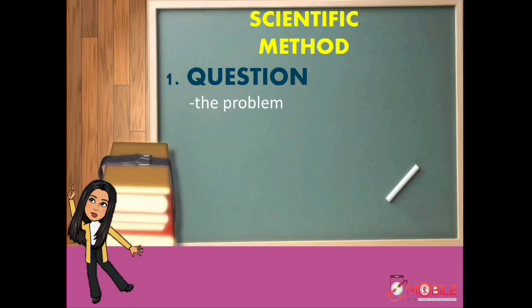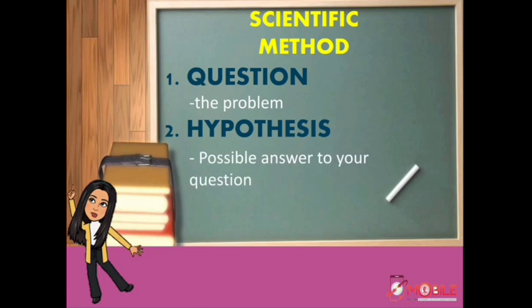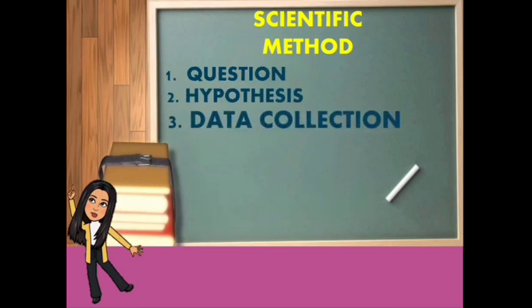The first step of scientific method is what we call the question or the problem. Before performing an experiment, you should have a definite purpose of why you are going to do such activity. And this question will lead to your hypothesis or the possible answer to your question. It should be stated in a sentence with maybe, perhaps, or I think, or it looks more likely as predictions.